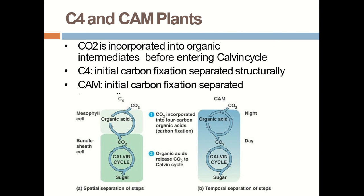Comparing C4 and CAM plants: C4 plants show spatial separation and CAM plants show temporal separation. In the C4 plant, during the day CO2 comes in, binds with PEP, generating oxaloacetate, then malate, which enters the bundle sheath where it releases CO2 and enters the Calvin cycle. In the CAM plant, at night CO2 enters the mesophyll cell and is involved in generating malate and malic acid; malic acid is stored in the vacuole. In the daytime, malate enters for the Calvin cycle. So spatial separation occurs in C4 plants, and temporal separation occurs in CAM plants.